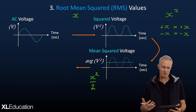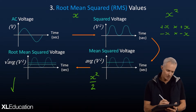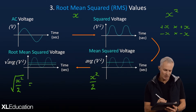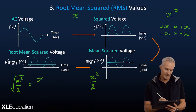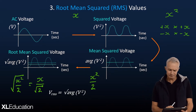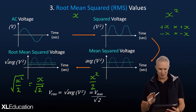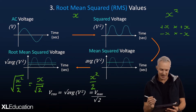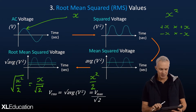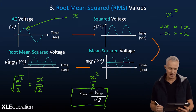That leads us to the equation: V-rms is the square root of the mean of V squared. The conclusion of this whole journey is that all we need to do is take V-max and divide it by root 2. So if you remember nothing else of this mathematical journey, remember that equation: V-rms equals V-max over root 2.